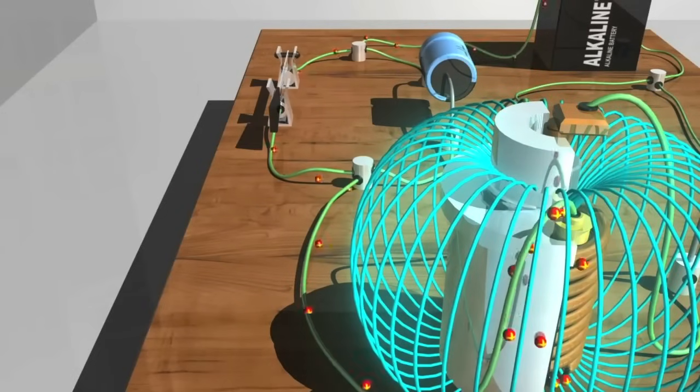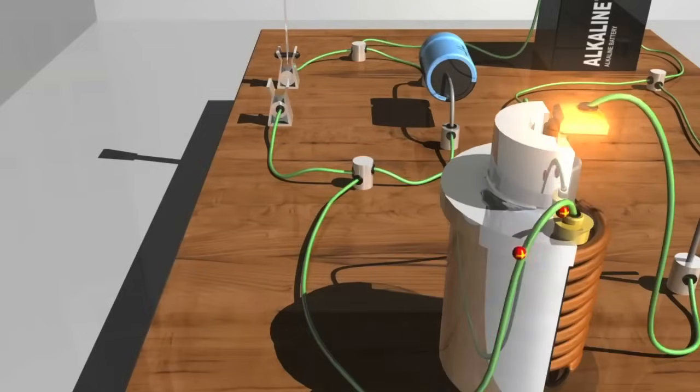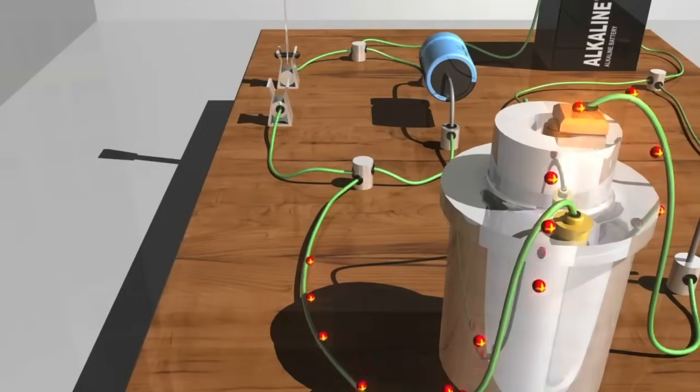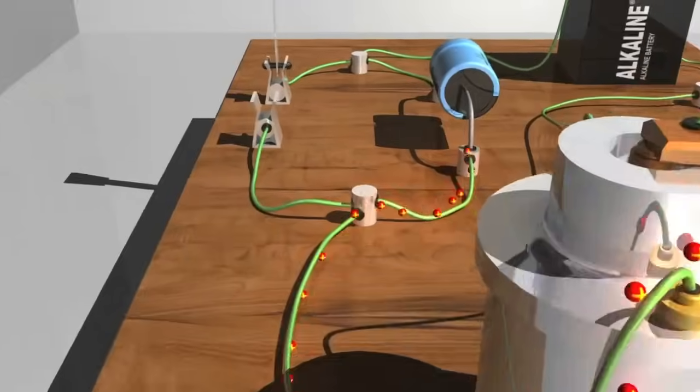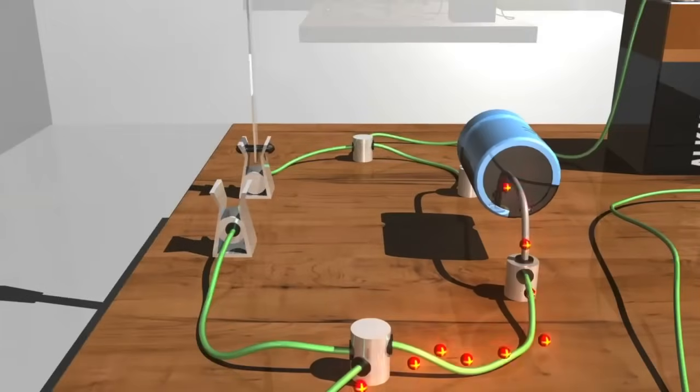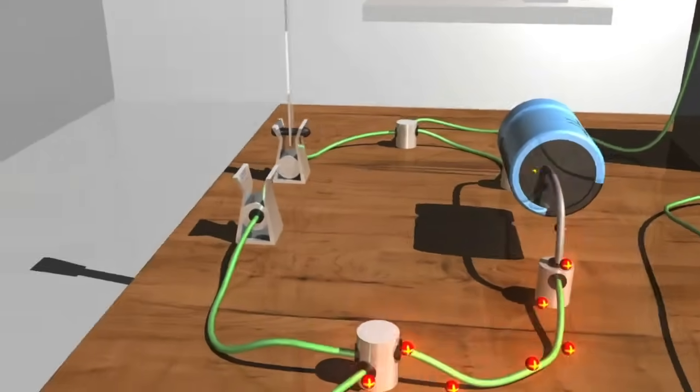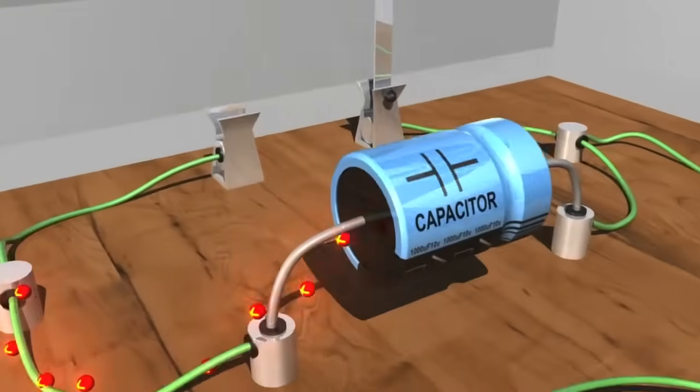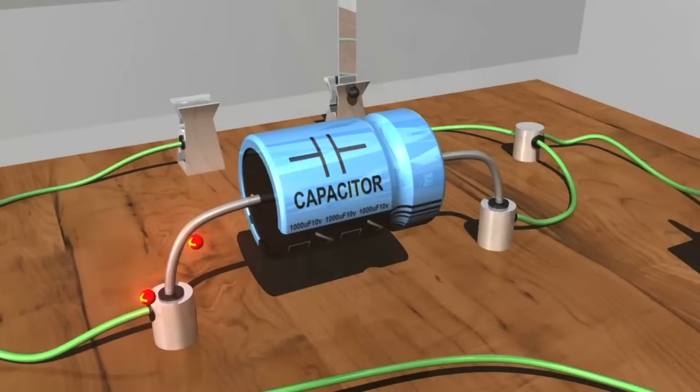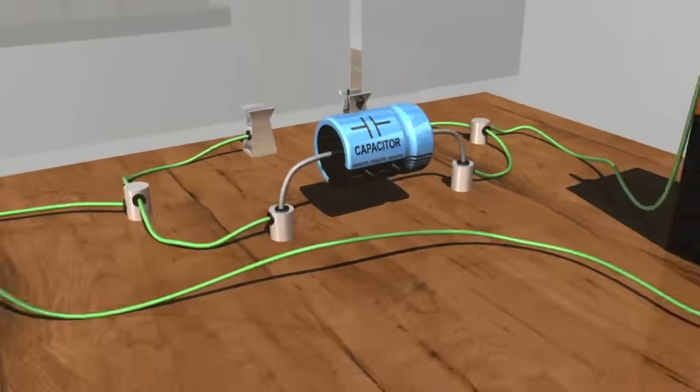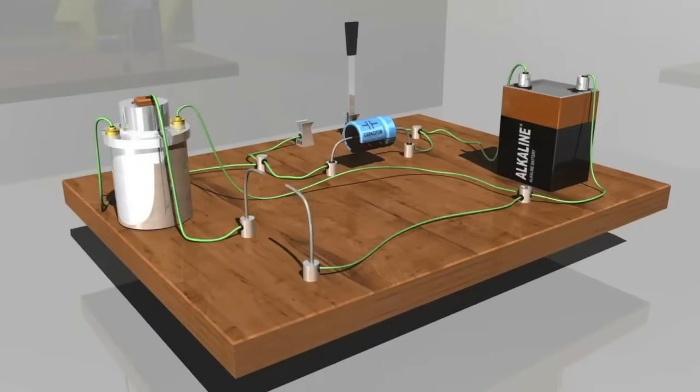When the knife switch opens and the field around the coil collapses, the collapsing field around the primary coil induces a surge of current, called back EMF, in the primary coil. This unwanted surge of electricity travels back toward the switch. The job of the capacitor, called a condenser in auto-ignition systems, is to safely absorb the back EMF and prevent the surge from reaching the switch and creating a damaging spark across those points.